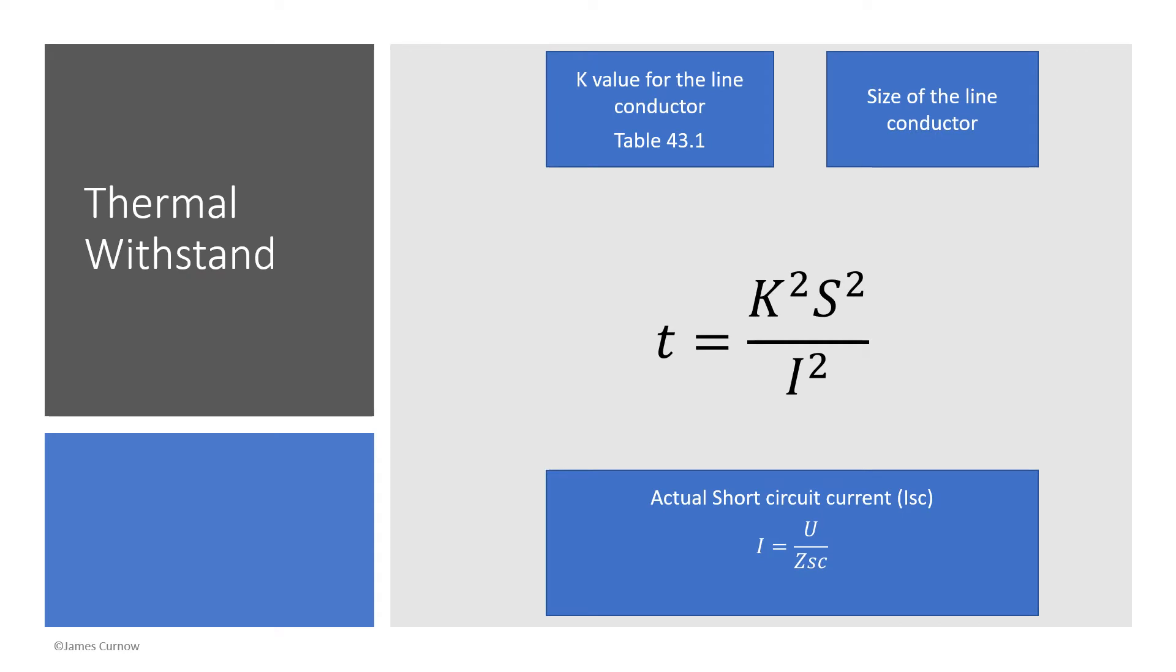Looking at the first equation in more detail, the equation for thermal withstand, what we're looking for here is the time in seconds, the time that the cable can withstand that level of short circuit current. The formula is T equals K squared multiplied by S squared divided by I squared. The K is the K value for the line conductor which is found in table 43.1.